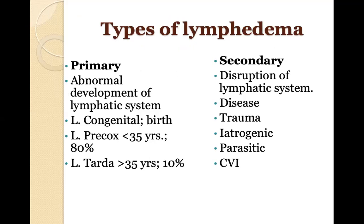Types of lymphedema: primary lymphedema breaks down into congenital — present at birth with visible swelling; lymphedema praecox — occurring earlier in life, often first showing around teenage years; and lymphedema tarda — where the individual has no apparent lymphedema for several decades and only later develops it. Secondary lymphedema has been previously discussed.